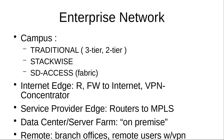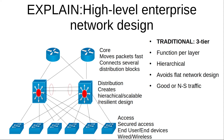Your enterprise network is composed of a campus where you can choose to use a traditional design, a stack-wise design, or SD-Access design. You have an internet edge where your routers, firewalls, and VPN concentrators live. There is a service provider edge where routers connect your enterprise to private carrier networks, such as MPLS, and remote networks such as branch offices or remote users using VPNs.